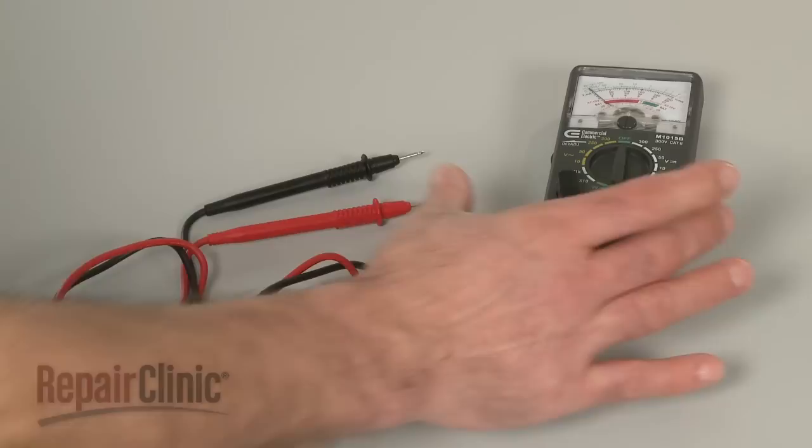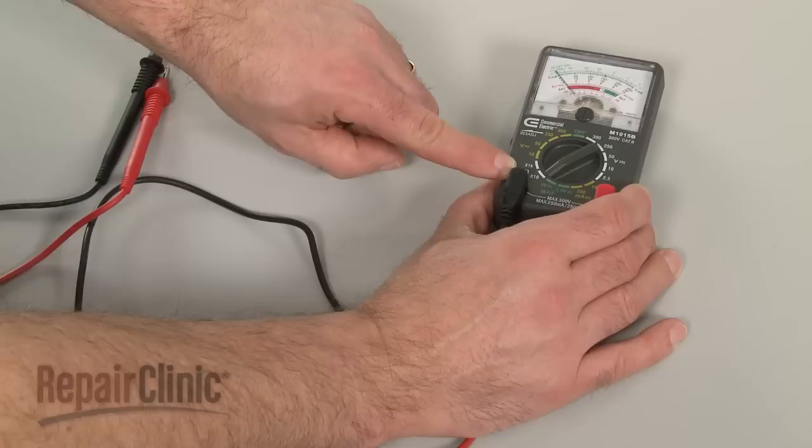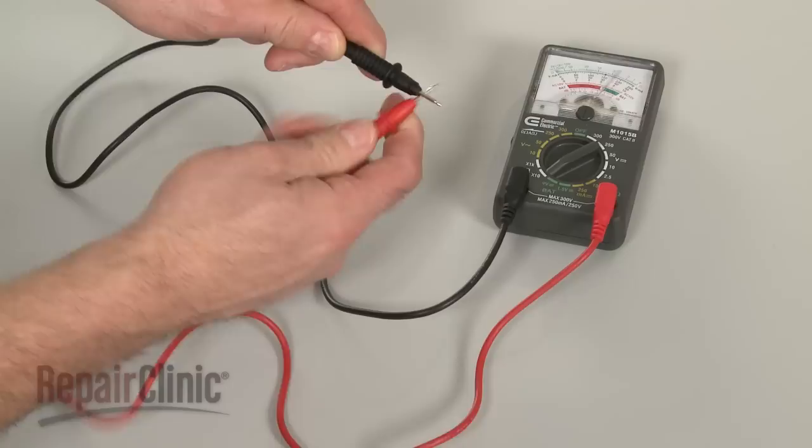When using an analog model, first rotate the range selection dial to the lowest setting for ohms of resistance. Then calibrate the meter by pinching the probes together while adjusting the needle to read zero.